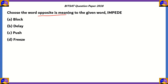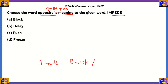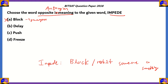The next question: choose the word opposite in meaning to the given word — 'impede.' Opposite in meaning means we have to find the antonym of the word 'impede.' The word 'impede' means to block or to restrict someone or something from happening. Therefore, option A — 'block' — would be a synonym of the word 'impede,' so option A is incorrect.